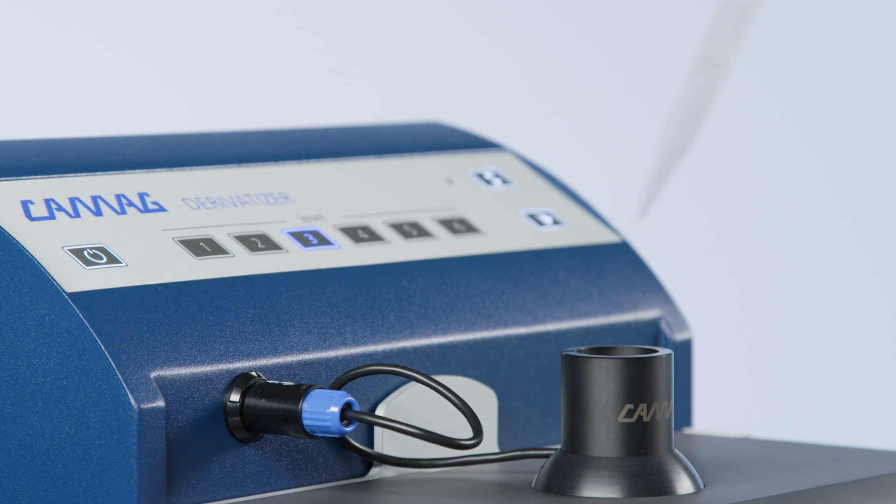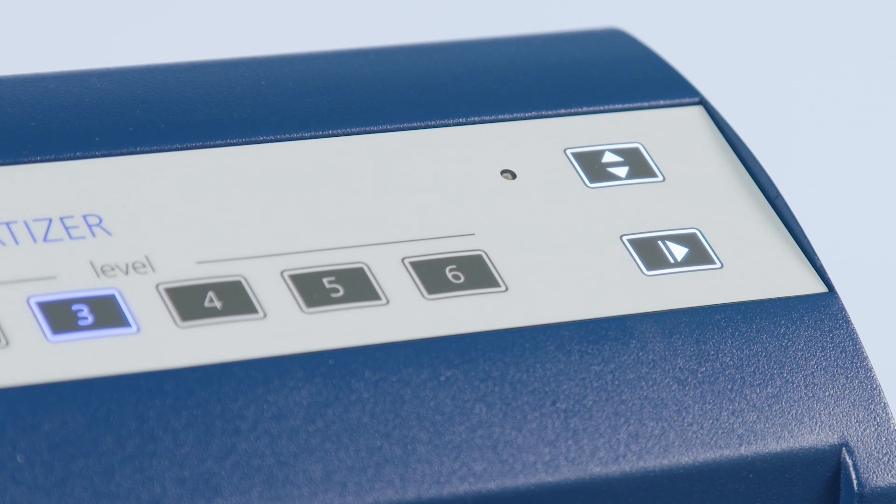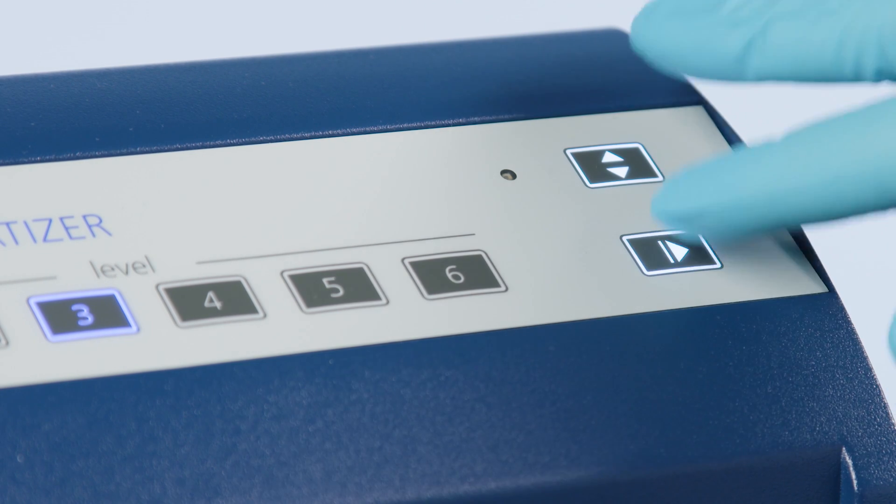Fill the recommended volume of reagent into the nozzle. The spraying process is started by selecting the spraying level and activating the start button.